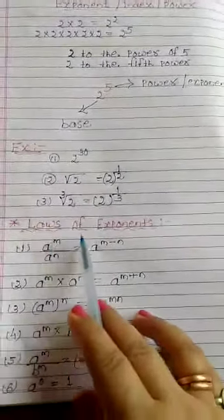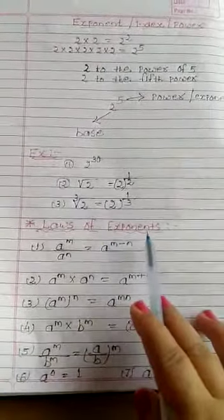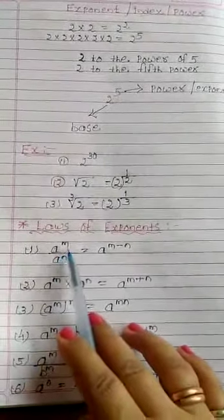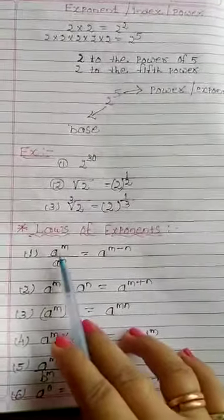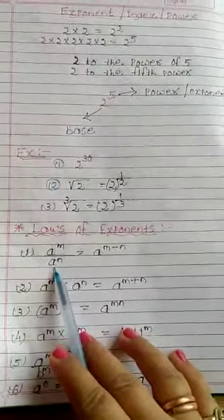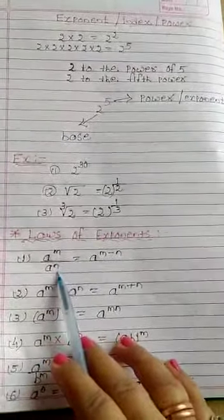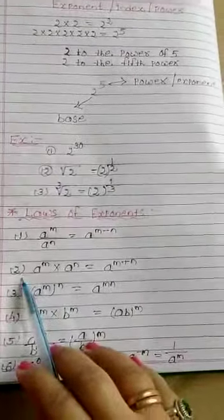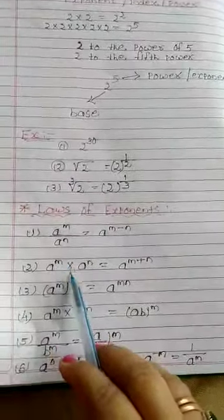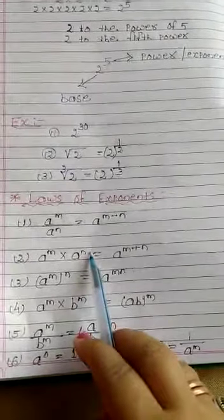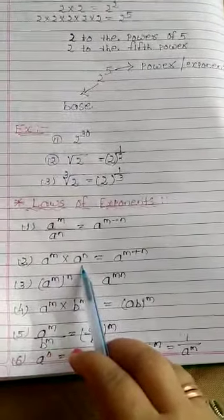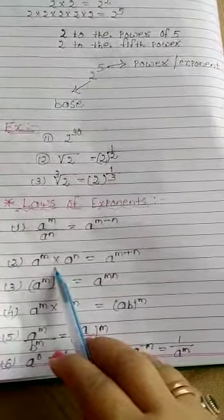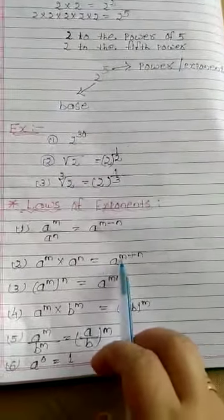Now the Laws of Exponent. Some laws we have in exponent and power. First law: a to the power m divided by a to the power n — the base is same and there is a divide sign, so we subtract their powers. Second law: a to the power m multiplied by a to the power n — base is same and different powers with a multiplication sign, so we add the powers.